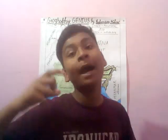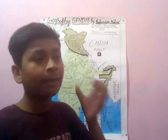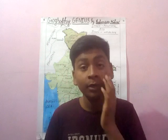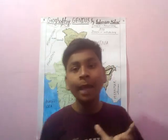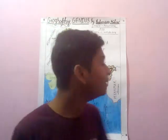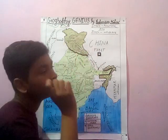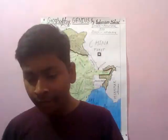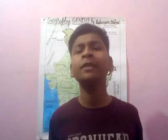They increase in height from south to north — Himadri has the greatest height and is in the north, Himachal is in the middle, and Shivalik is the last. Himadri, also called the Greater Himalayas, is in the northern part and consists of the highest peaks in the world. These mountains are permanently covered with snow.